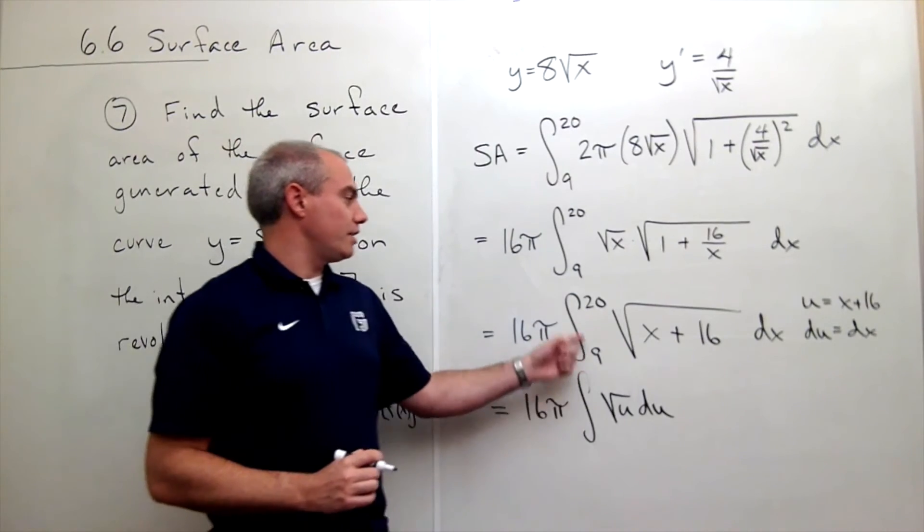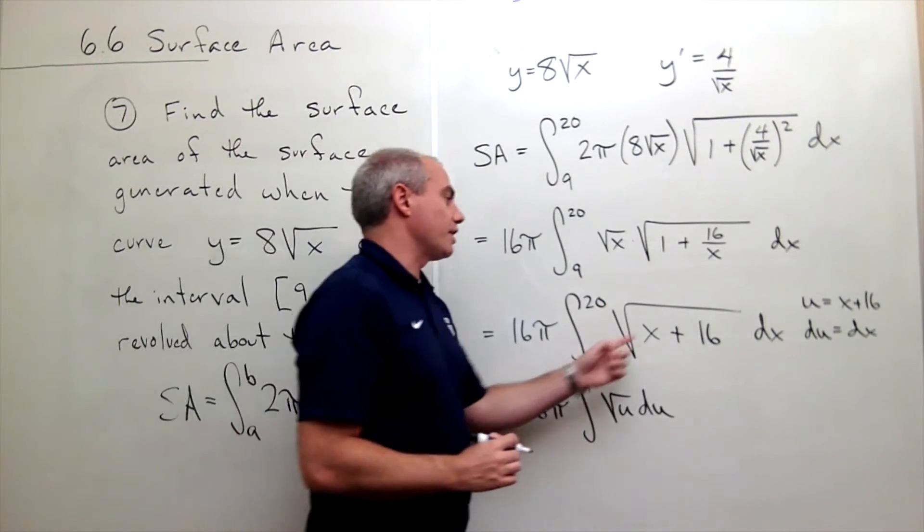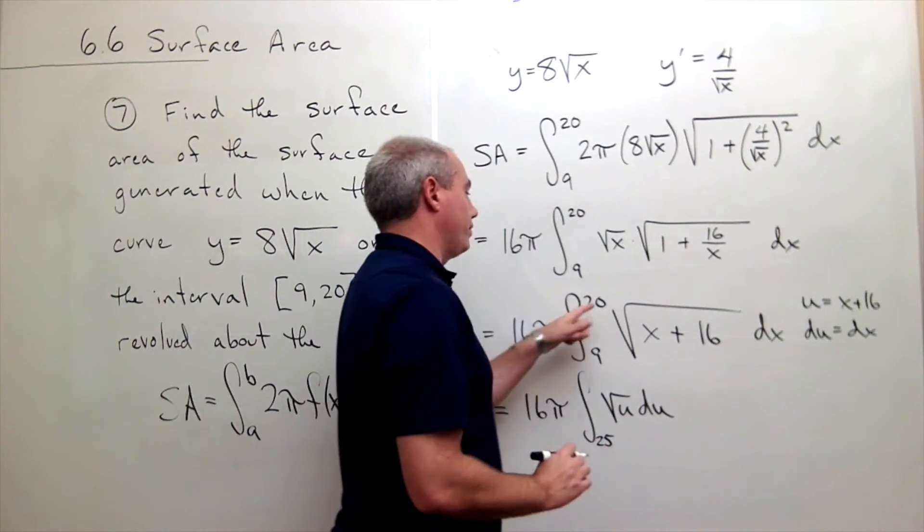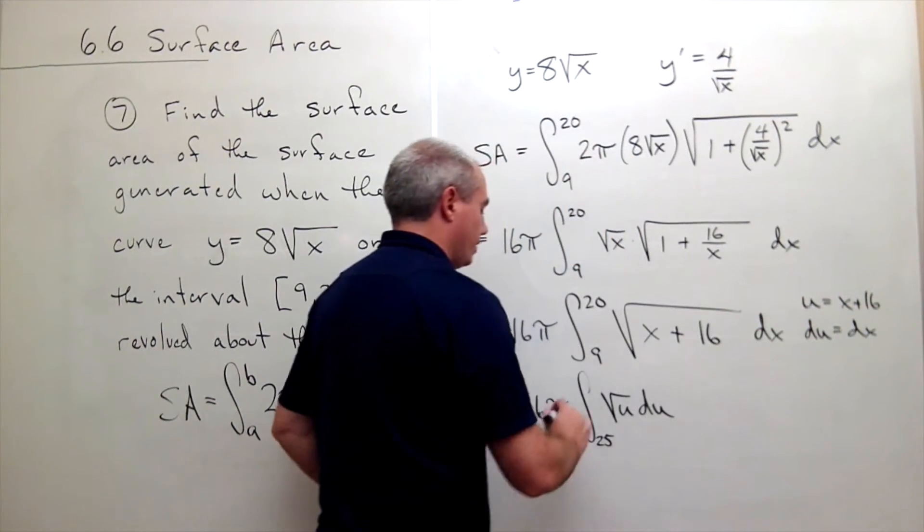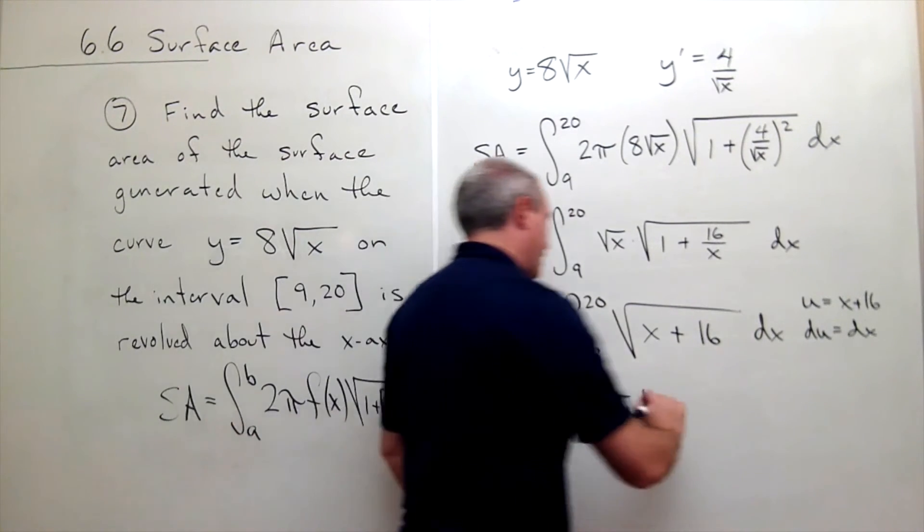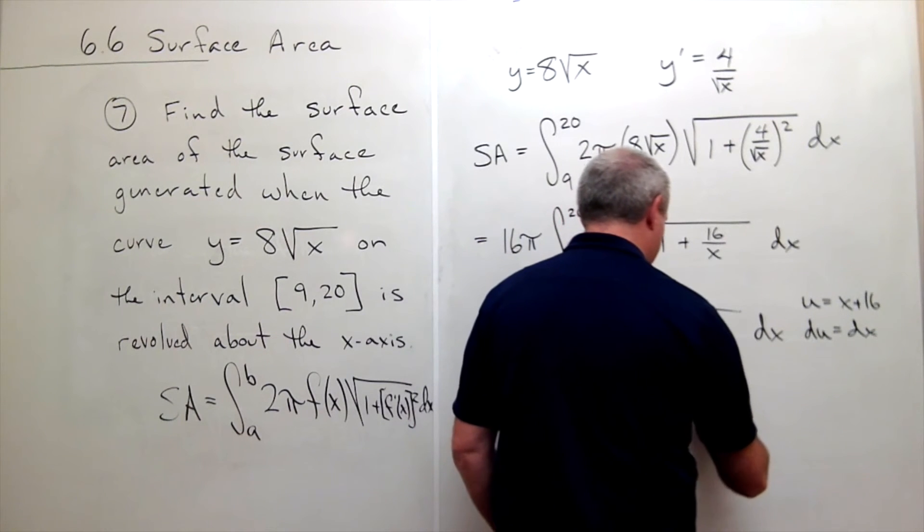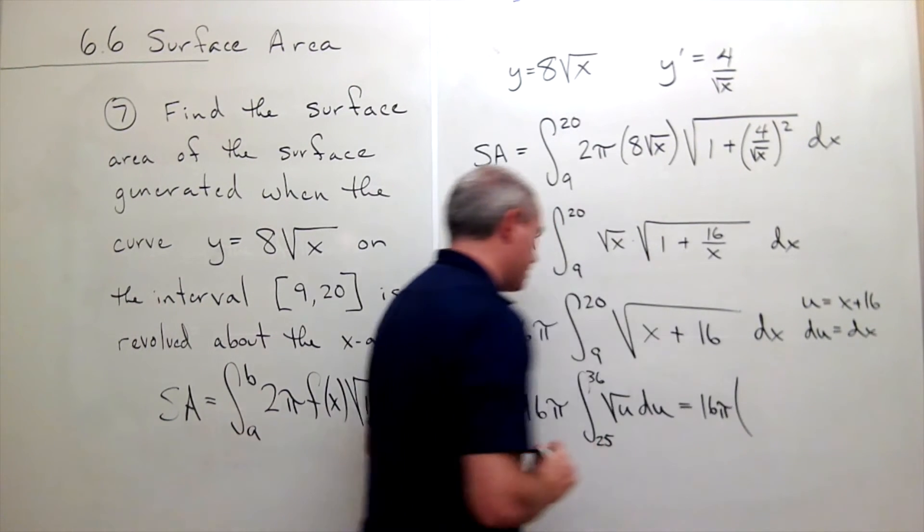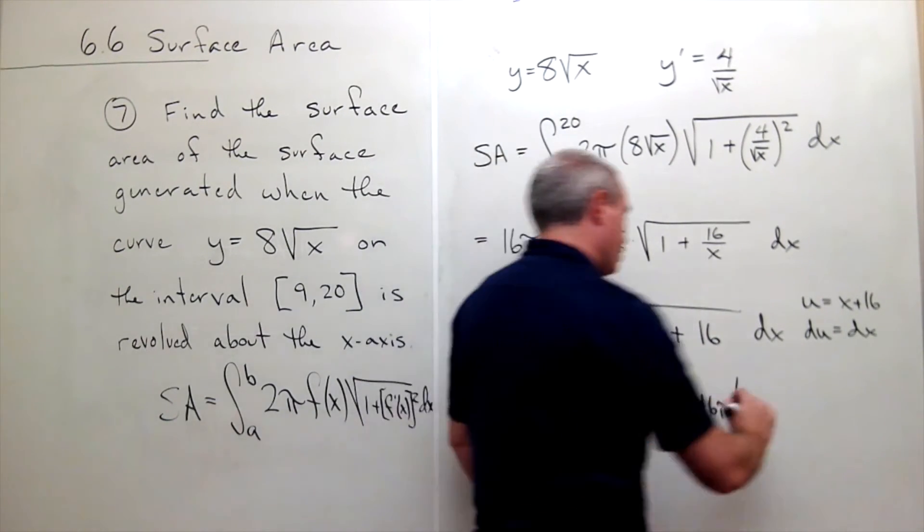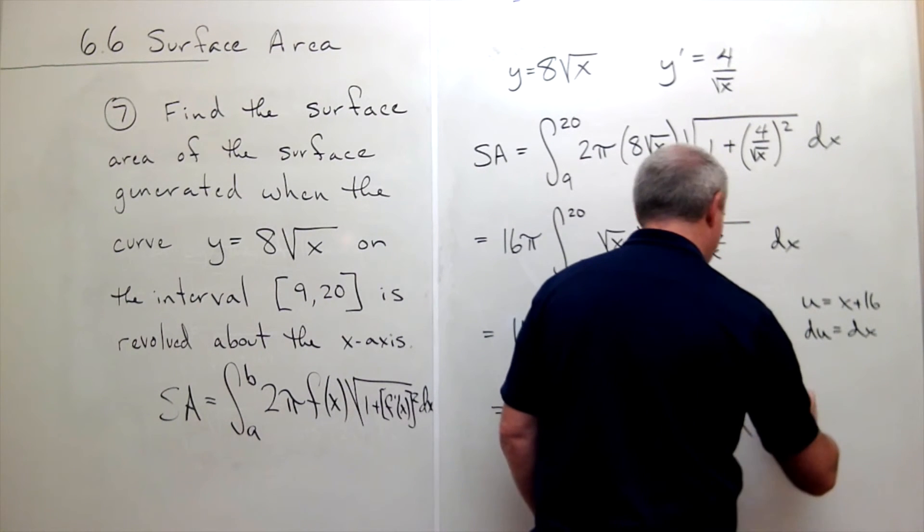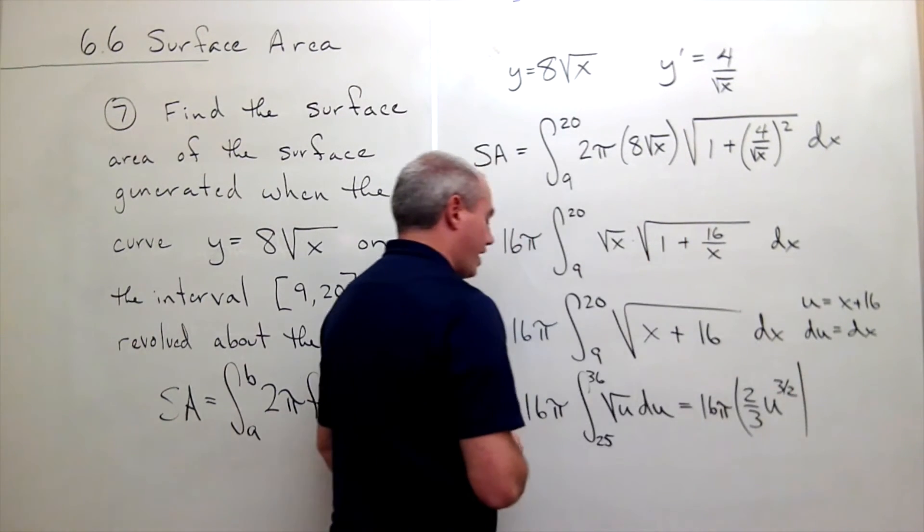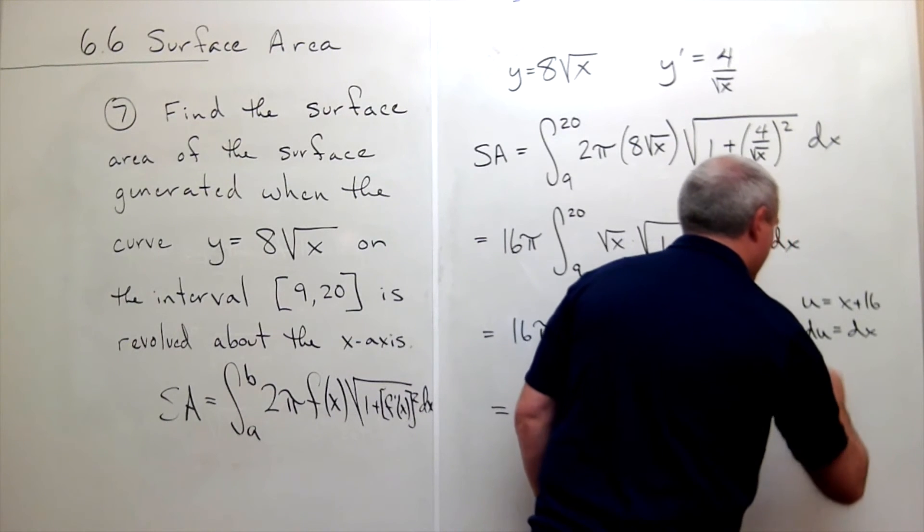And then I get integral of the square root of u du. Now let's plug in these values for x. If I plug 9 in for x I get that u would be 25. And if I plug in 20 for x I get that u would be 36. So now we're integrating from 25 to 36. Let's take an anti-derivative and I get 16π times the anti-derivative of square root of u is u to the 3 halves times 2 thirds. All of that evaluated from 25 to 36.